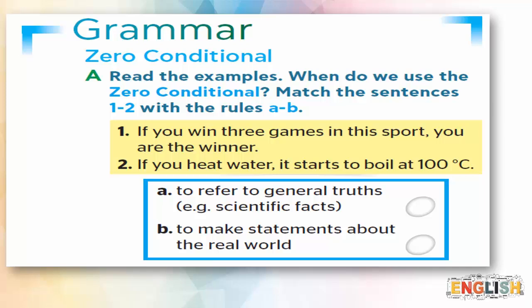Okay, so sentence number one — 'If you win three games in the sport, you are the winner' — is to make a statement about the real world. Whereas sentence number two — 'If you heat water, it starts to boil at 100 degrees Celsius' — is to refer to a general truth or scientific facts. I believe it's clear now. Let's move on to watch a video, then we'll discuss it together.